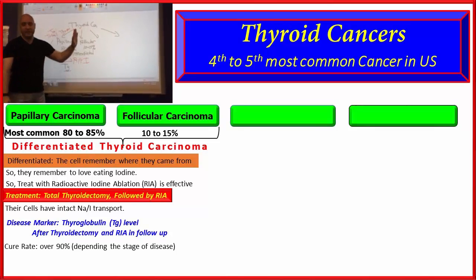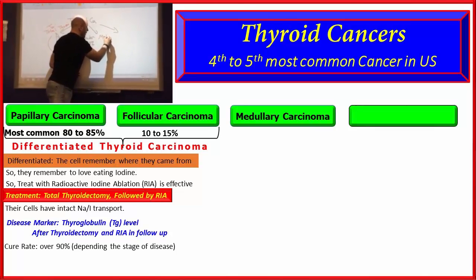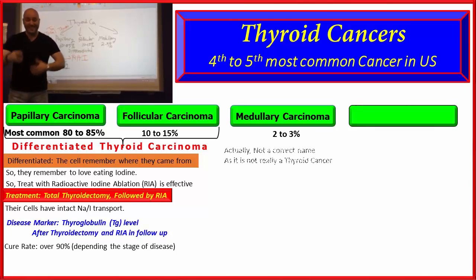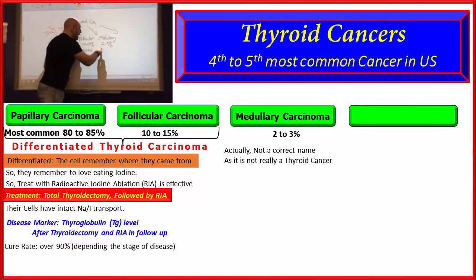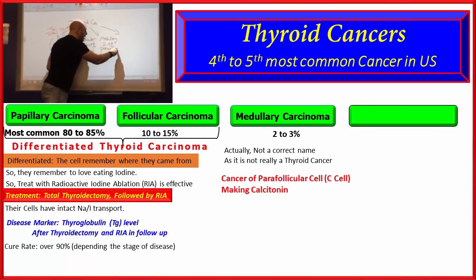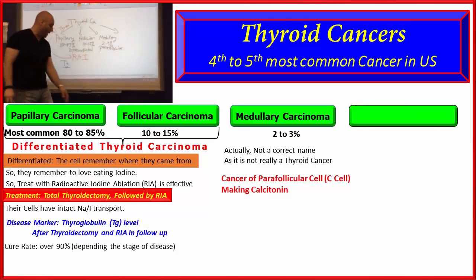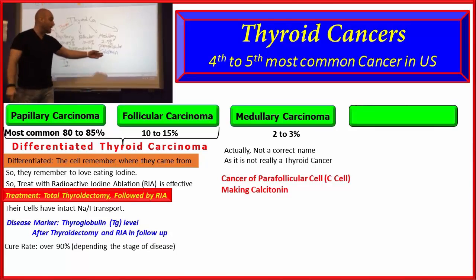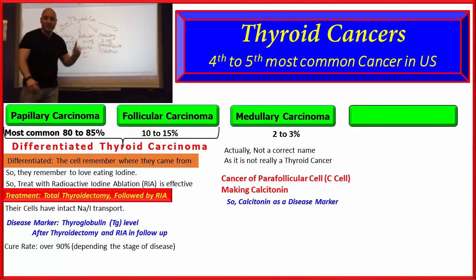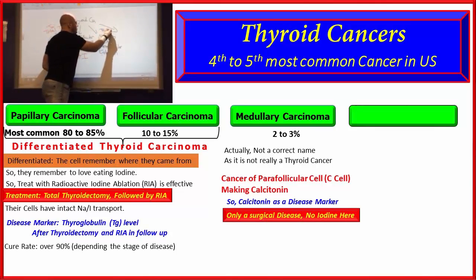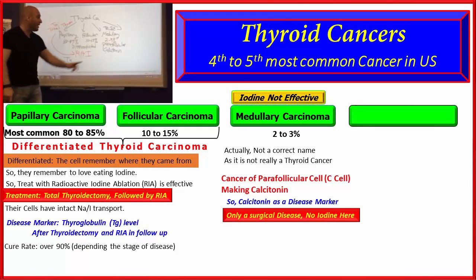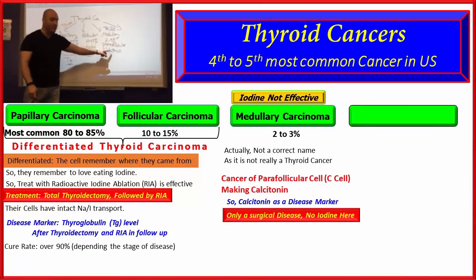Now when we get to the rarer categories: the third most common is called medullary carcinoma, which accounts for about 2 to 3% of cases. Medullary thyroid carcinoma is actually a misnomer — it's not really a thyroid cancer. It's a cancer of the parafollicular cells, not the follicular cells. These are the cells that make calcitonin, and that's why we use calcitonin as a disease marker for medullary carcinoma. We treat medullary carcinoma with surgery only — this is only a surgical disease. There's no iodine here. Don't get that confused. You don't give iodine to medullary because it's a cancer of the C cells, the calcitonin-producing cells.